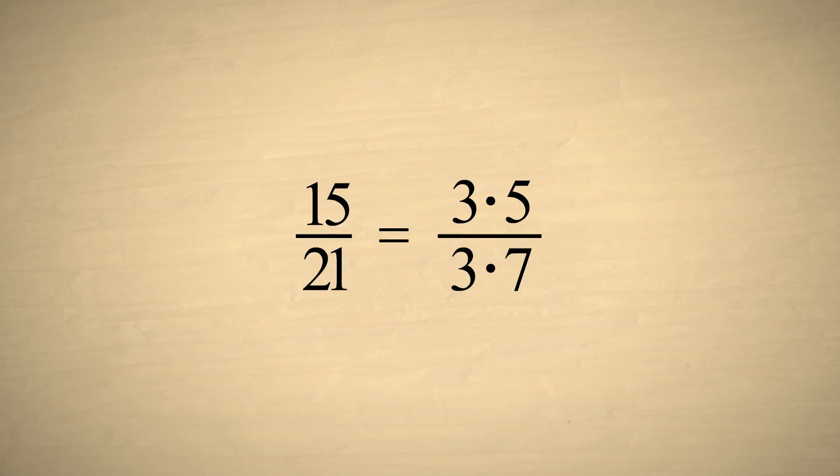Factoring the numerator and denominator, we can see that they both have a factor of three in common. So we can divide the top and bottom of this fraction by three. Of course, this has the same effect as simply removing a factor of three from the top and bottom.